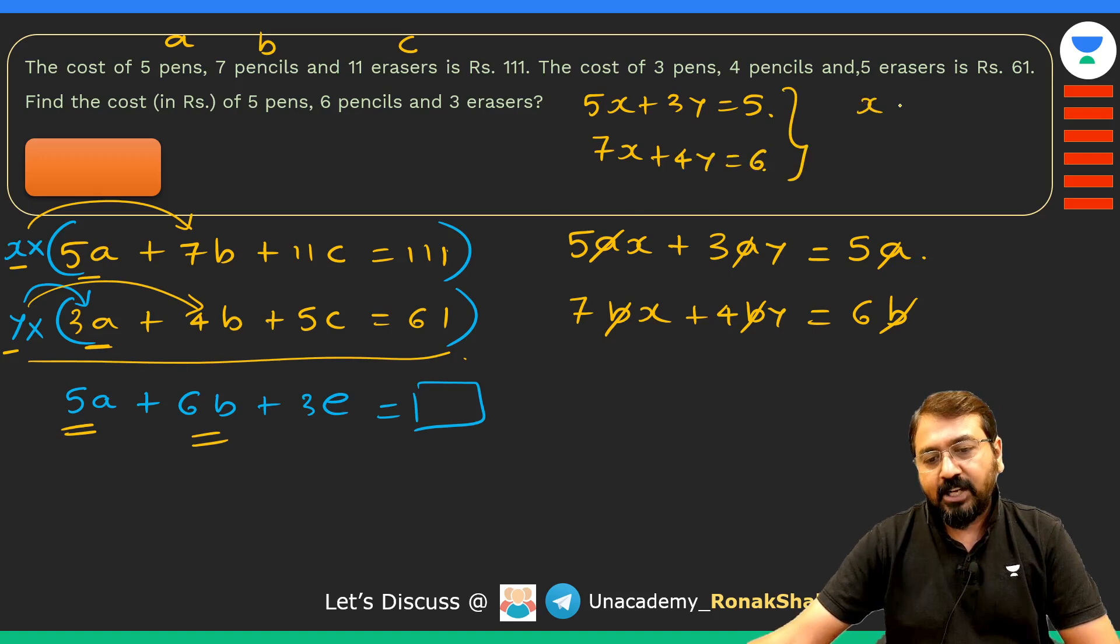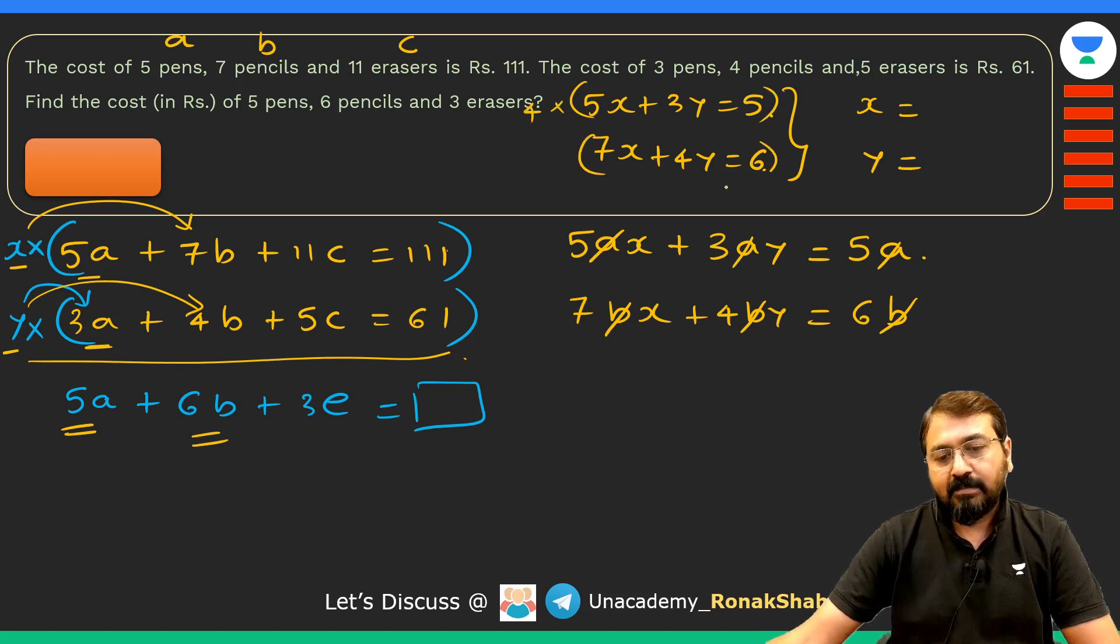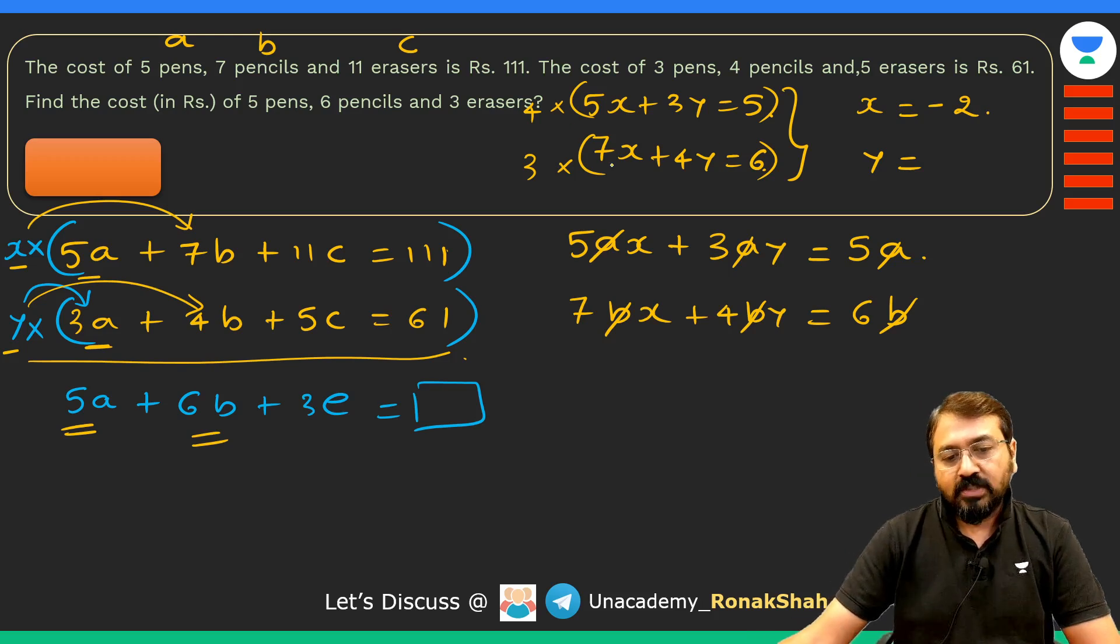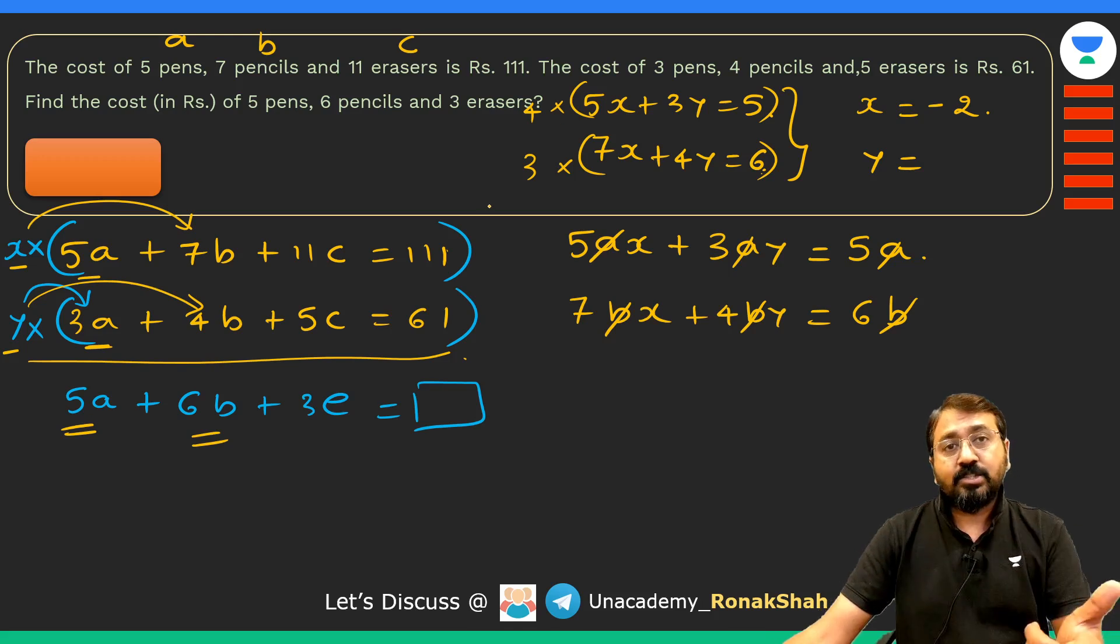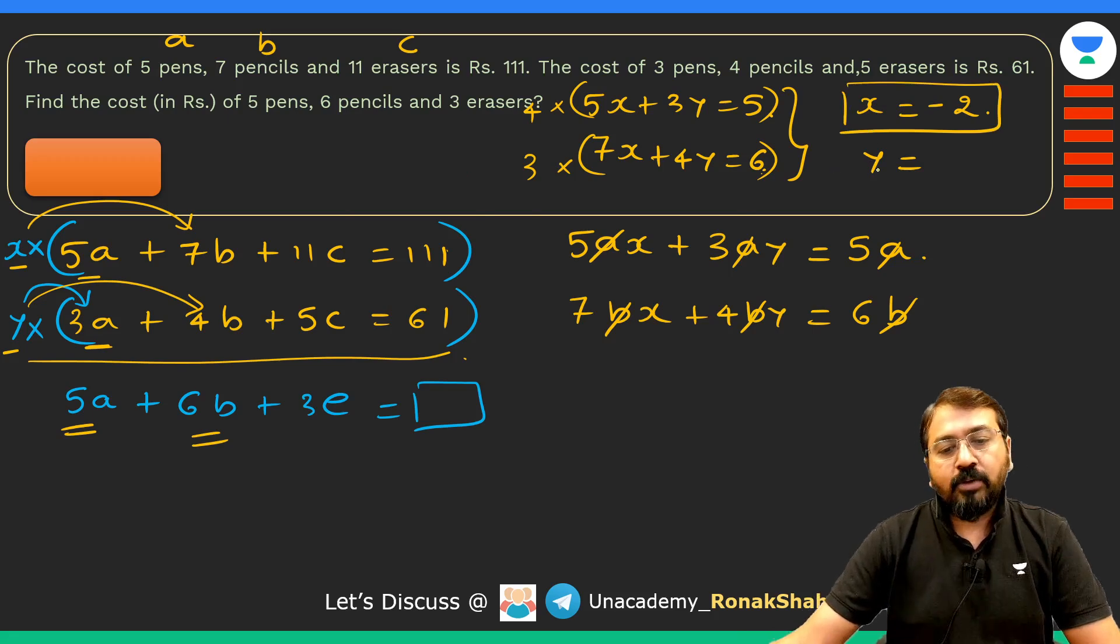Now we just need to solve these two equations and get the value of x and y. It's very easy to make out that you can multiply the first equation by 4 and the second equation by 3, and then if you subtract, you will get the value of x as minus 2. 7 threes are 21, minus 20x is x, and this y part will get cancelled off. 6 threes are 18, 5 fours are 20, 18 minus 20 is minus 2, so we get value of x as minus 2.